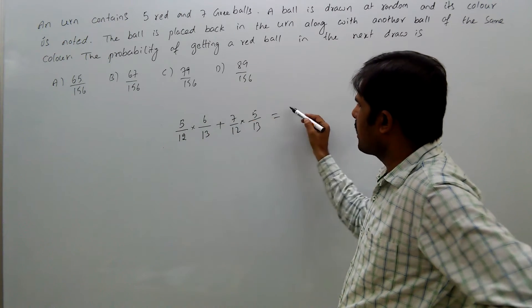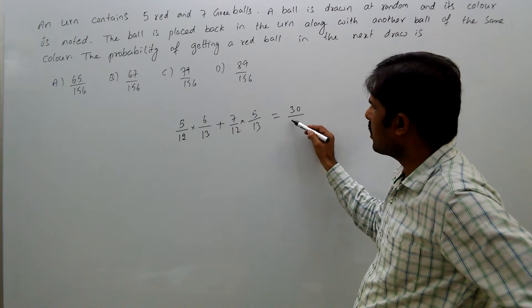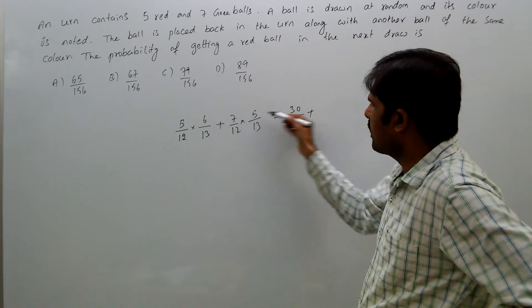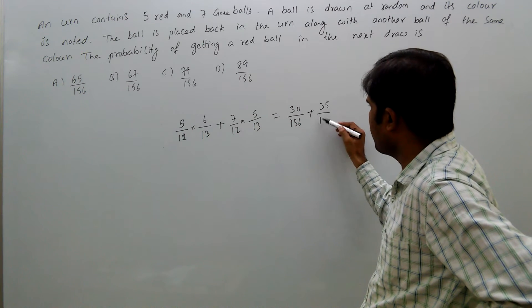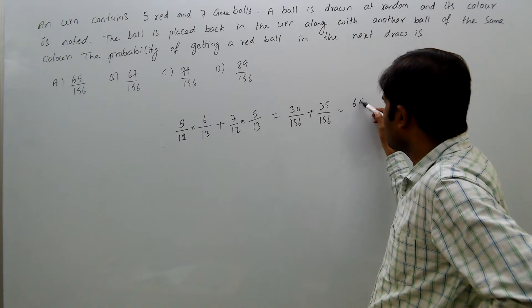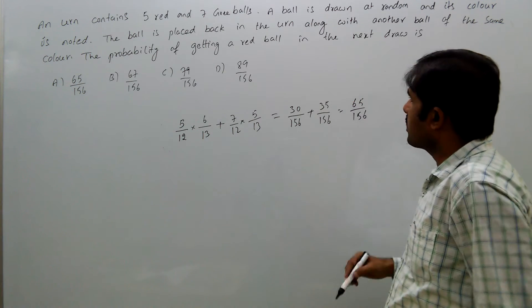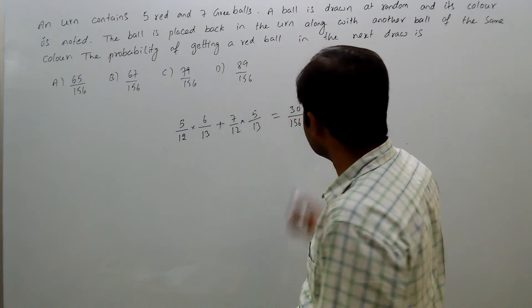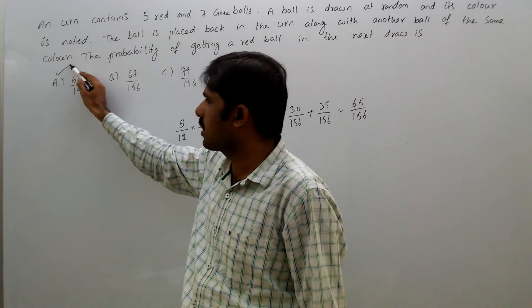So the total probability is 5/12 times 6/13 plus 7/12 times 5/13, that is 30 by 156 plus 35 by 156, which equals 65 by 156. The probability of getting a red ball in the second draw is 65 by 156.